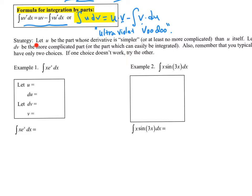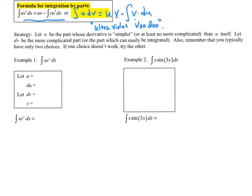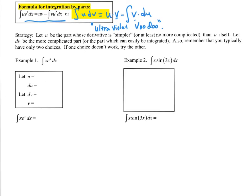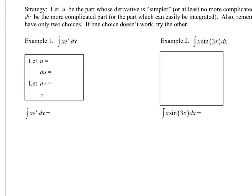Let's figure out some strategy. A lot of times we want u to be the simpler or less complicated piece. We want dv to be the more complicated part which you also can integrate because you're going to be working backwards on that. Remember you typically have only two choices. If one choice doesn't work, try the other. If at first you don't succeed, try, try again.